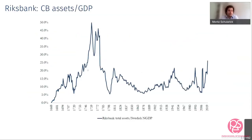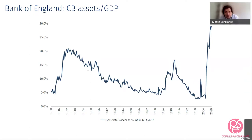Let's start with some charts. This is the Riksbank — central bank assets over GDP from the late 17th century to today. You see major fluctuations. In the case of the Riksbank, war finance in the 18th century led to expansions that were larger than today. For the Bank of England, you can see that relative to GDP, the central bank balance sheet expansion in the last decade is the largest on record — much larger than during the Napoleonic Wars, the South Sea Bubble, wars in the 18th century, and even World War II. This is 30% of GDP, which is indeed historically unprecedented for the Bank of England.